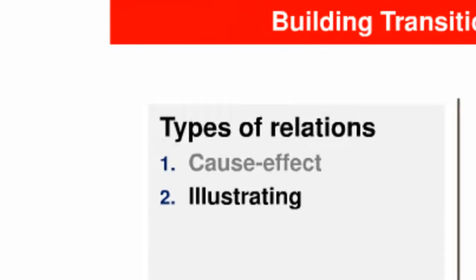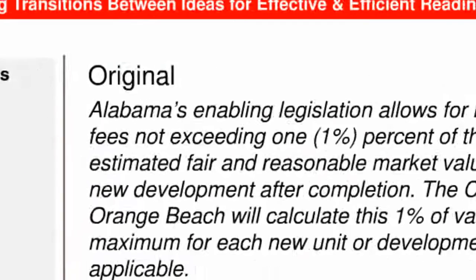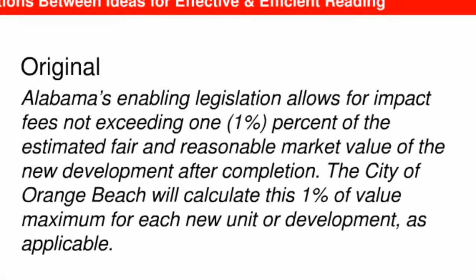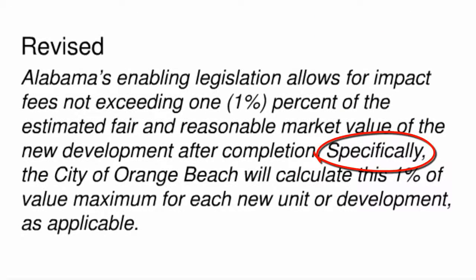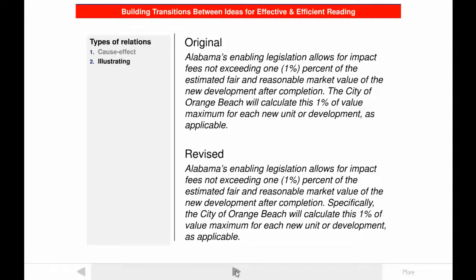The second type of relation that can be shown by transitions is illustrating. Look at another passage from the executive summary. The second sentence illustrates the meaning of the first, so this would be more clear if a transition like "specifically" were used. If you find that you see a relationship that's different from the one I'm talking about, that's the perfect piece of evidence that should convince you how important transitions are. With the transition, you know what the relationship is; without it, you and I might disagree.